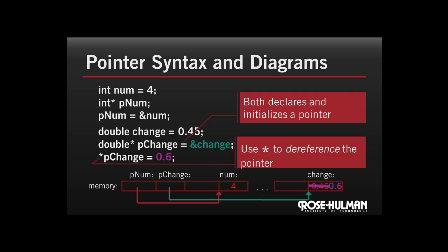What else can I do? You'll notice in this next line that I'm using the asterisk within an expression. That has a different meaning, and that's called dereferencing the pointer. I'm assigning a value to the variable to which pChange points. And in our example, we see that change no longer has the value of 45 hundredths, but now 6 tenths.